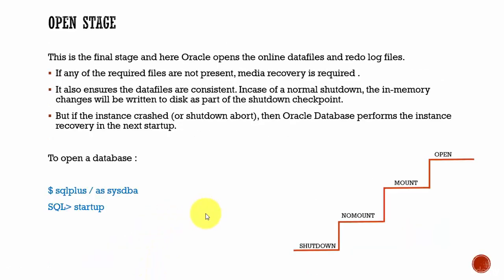The final step of startup is open. This is where Oracle opens all the online data files and redo log files. If any of these required files are not present, then media recovery is required. When opening these files, it ensures the data files are consistent. If the database was shut down normally, whatever data was in memory would have been written to disk, so all data is stored permanently and is consistent. But if the instance crashed for any reason and the database was shut down abruptly, data in memory will not have been written to disk.